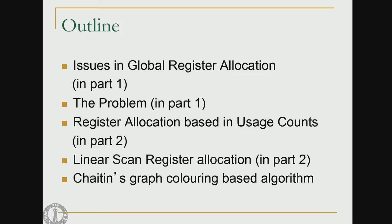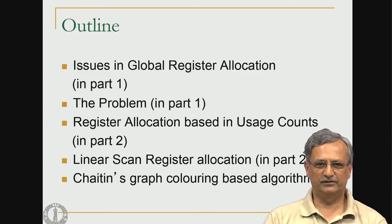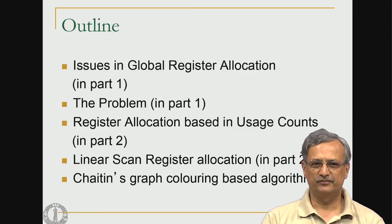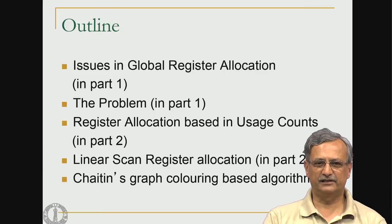Welcome to part 3 of the lecture on global register allocation. In part 1 we looked at the issues in global register allocation and discussed the definition of the problem itself. We also saw register allocation for loops, based on the principle of usage counts in part 2, and a very fast linear scan register allocation was also discussed.